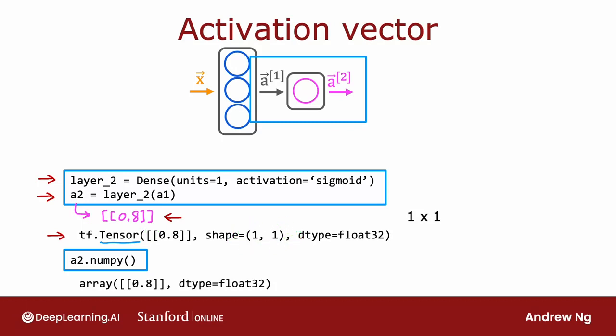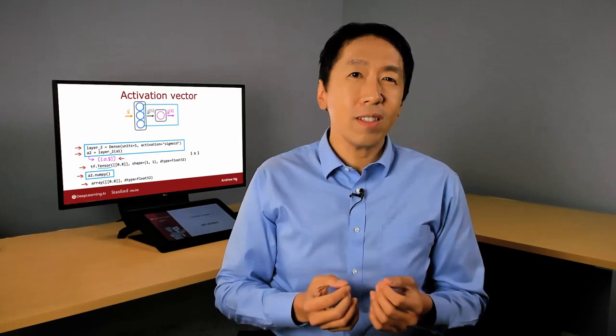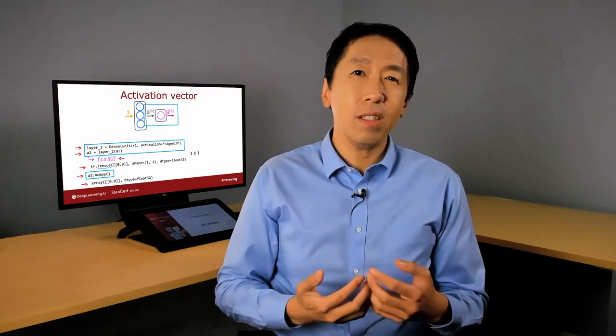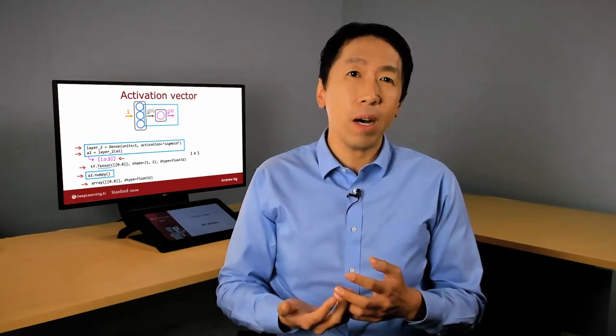And again, it is a float 32, a decimal point number, taking up 32 bits in computer memory. Once again, you can convert from a TensorFlow tensor to a NumPy matrix using A2.numpy. And that will turn this back into a NumPy array that looks like this. So that hopefully gives you a sense of how data is represented in TensorFlow and in NumPy.